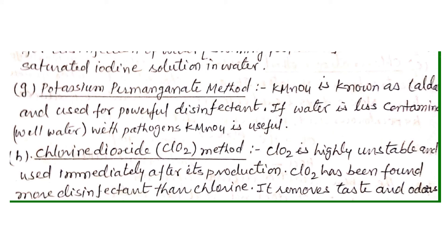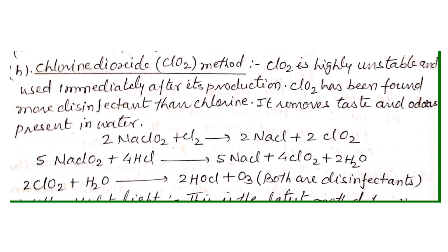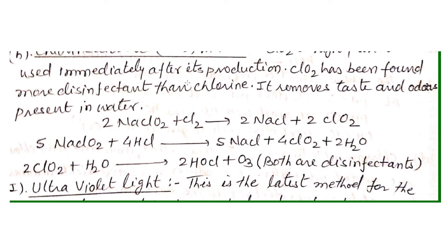The chlorine dioxide method: chlorine dioxide (ClO₂) is highly unstable and must be used immediately after production. ClO₂ has been found to be a more effective disinfectant than chlorine, and it also removes taste and odors present in water. The reaction proceeds as: NaClO₂ plus chlorine produces NaCl plus ClO₂. This ClO₂ reacts with water to produce an acid plus ozone, both of which are strong disinfectants that destroy all the pathogens, microorganisms, and bacteria present in water.